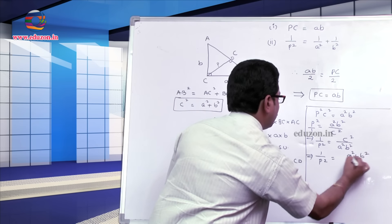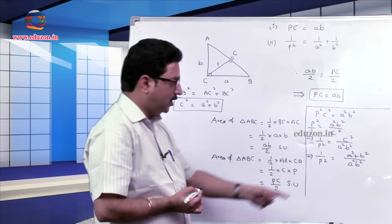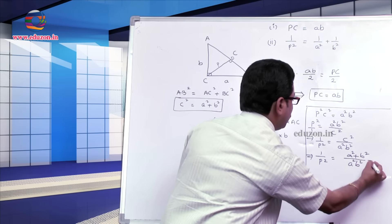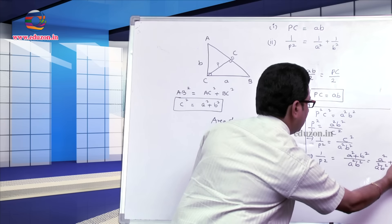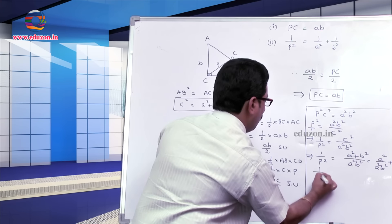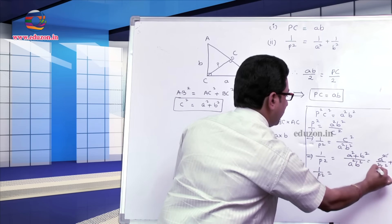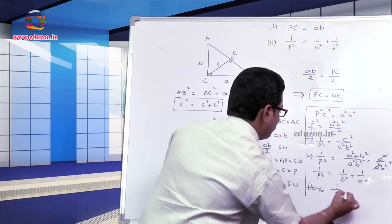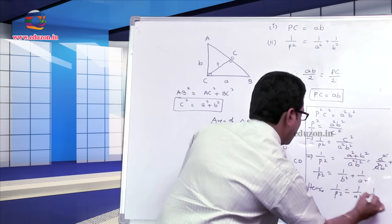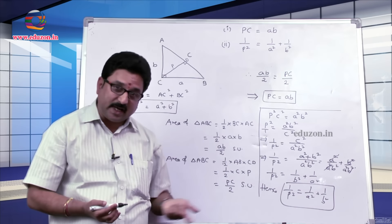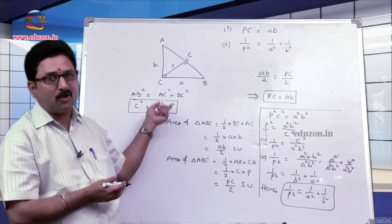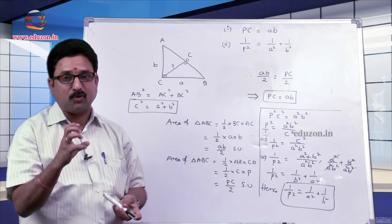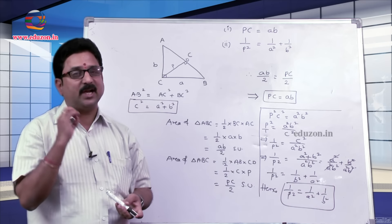Now we replace c square with a square plus b square, because of the Pythagoras property of the right angle triangle. So 1 by p square equals a square plus b square by a square b square. Splitting the numerator: this is a square by a square b square plus b square by a square b square. Cancelling a square with a square and b square with b square, we get 1 by p square is equal to 1 by b square plus 1 by a square, or written in order: 1 by p square is equal to 1 by a square plus 1 by b square. This is a numerical condition obtained using the Pythagoras principle. Such questions reflect in Paper 2 of Telangana State Board.